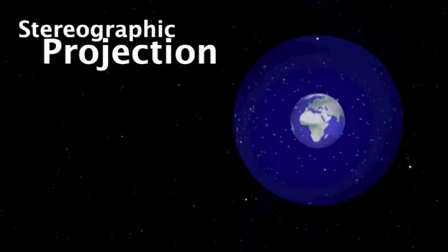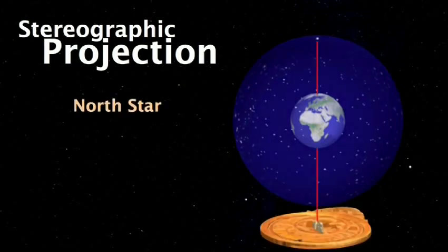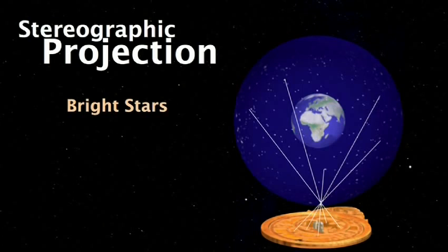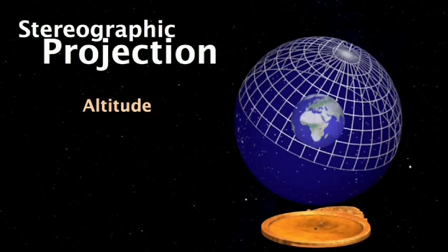The central idea that makes this computer work is called stereographic projection. The concept is: how do you represent the three-dimensional image of the night sky that surrounds us onto a flat, portable, two-dimensional surface? Imagine the Earth is at the centre of the universe, surrounded by the sky projected onto a sphere. Each point on the surface of the sphere is mapped through the bottom pole onto a flat surface. The North Star corresponds to the centre of the device; the ecliptic — the path of the sun, moon and planets — corresponds to an offset circle; the bright stars correspond to little daggers on the reet; and altitude corresponds to the plate system.